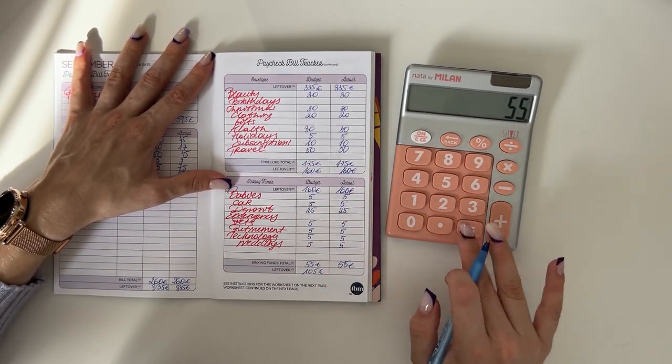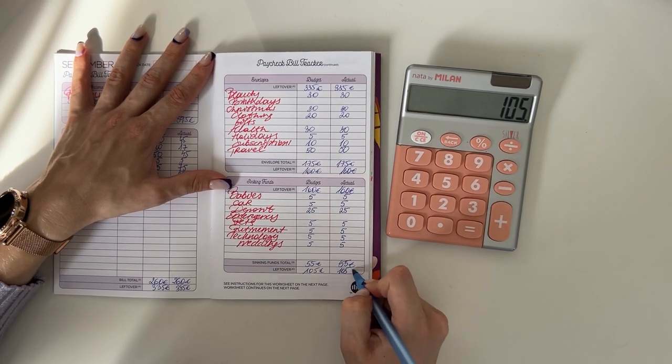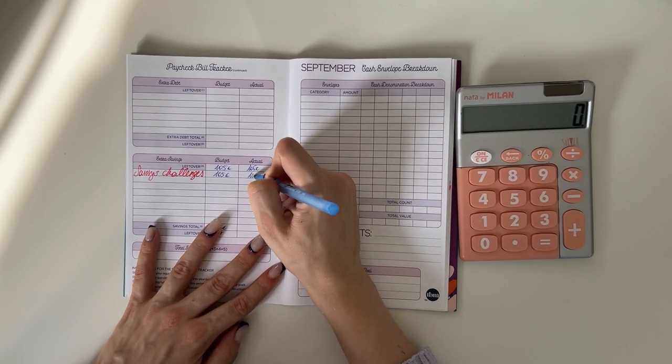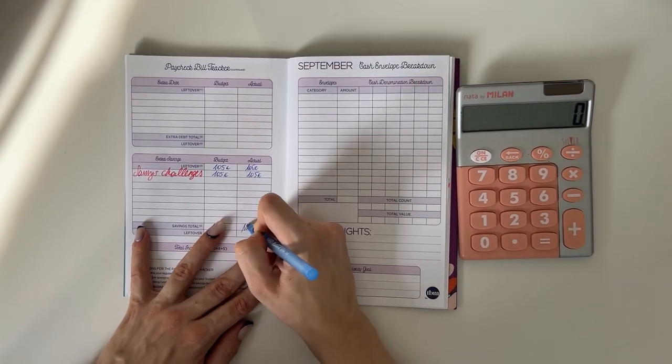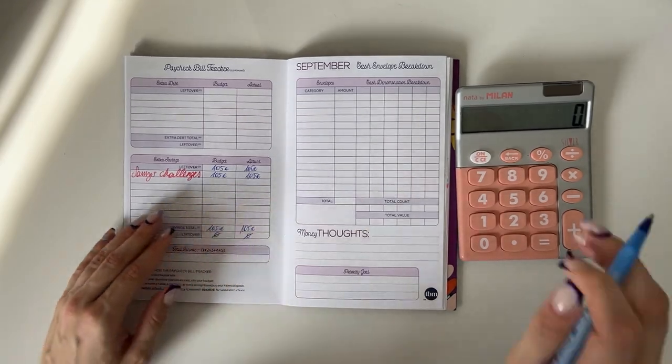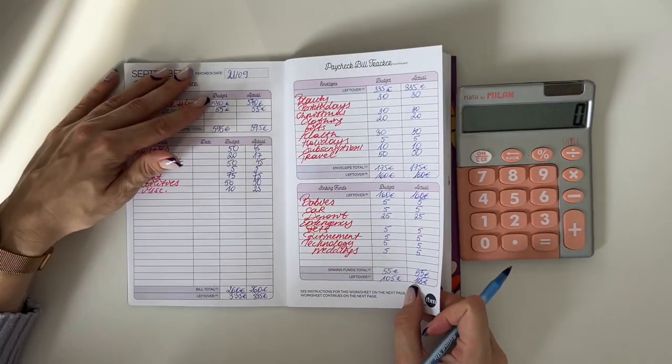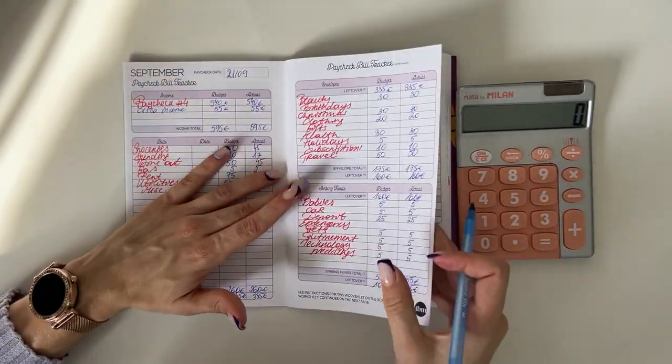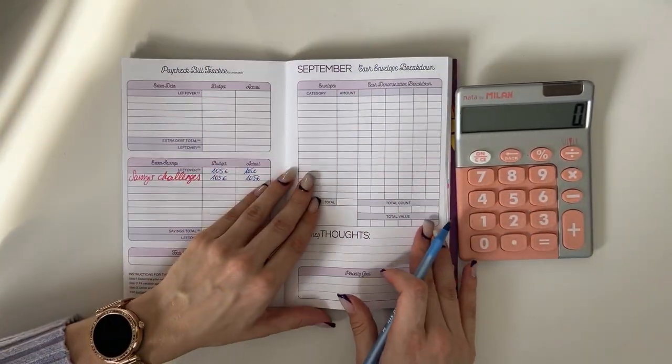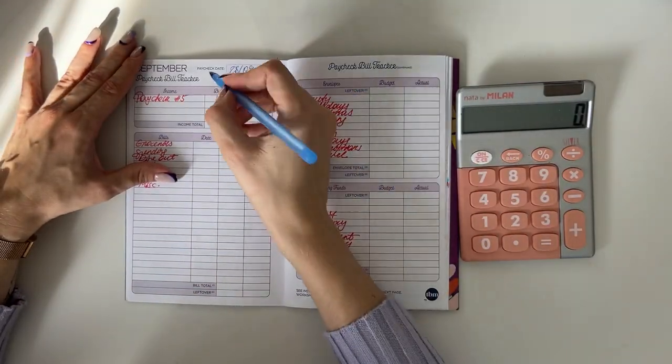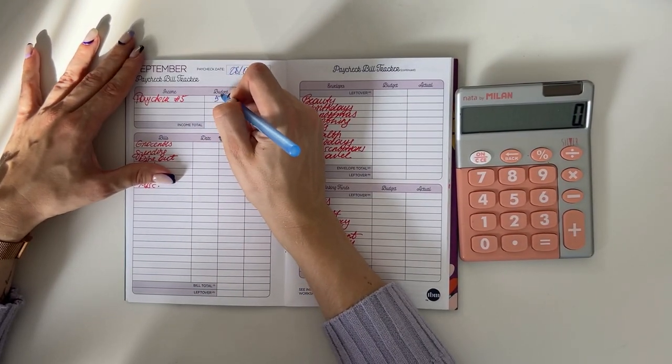$160 minus $55 is $105, and all of that went into our savings challenges, which means we have zero euros. And that is good because we are a zero-based budget and it means that each euro of our income has a place to go into our budget.